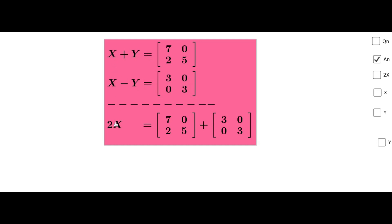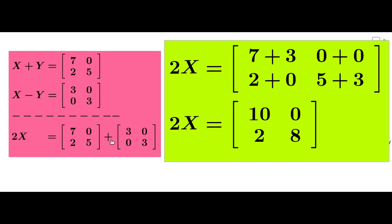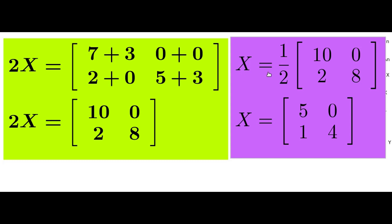Adding the two equations: X+X = 2X and Y+(-Y) = 0. So 2X = [7, 0; 2, 5] + [3, 0; 0, 3] = [7+3, 0+0; 2+0, 5+3] = [10, 0; 2, 8]. Therefore X = (1/2) × [10, 0; 2, 8], giving X = [5, 0; 1, 4].